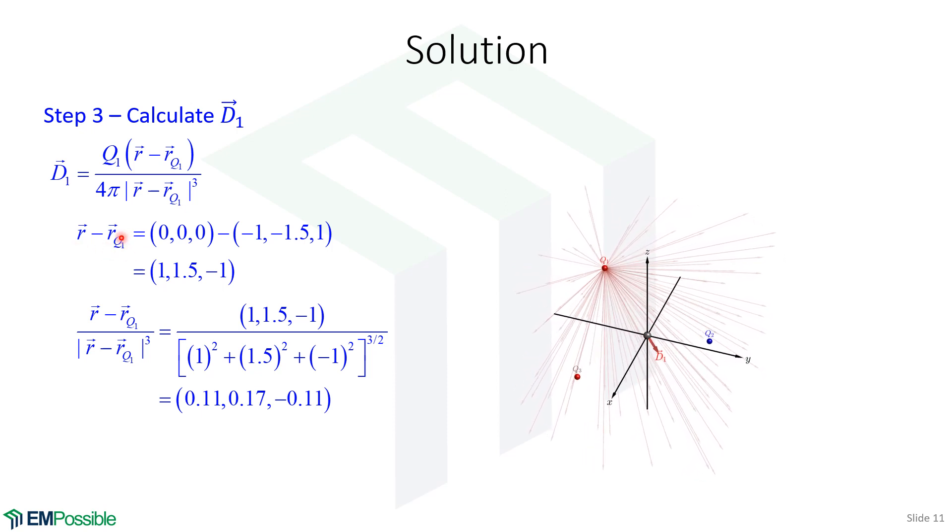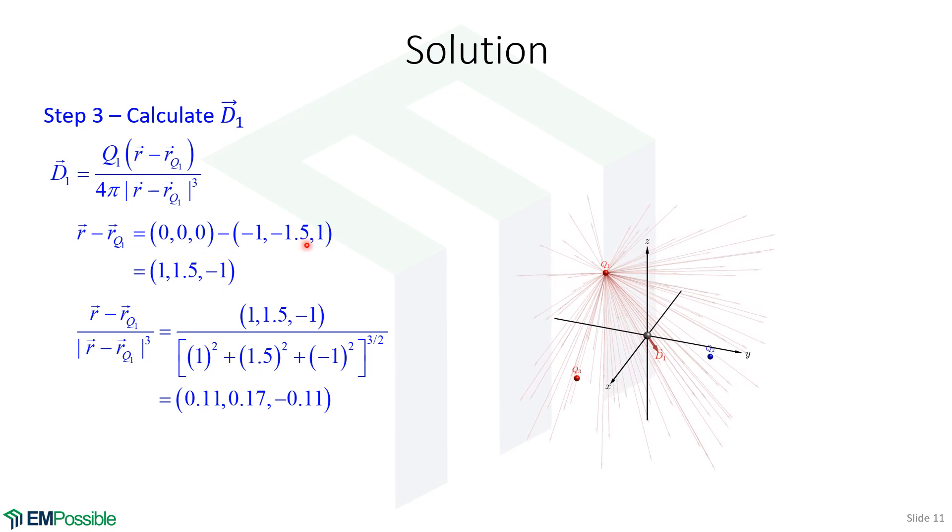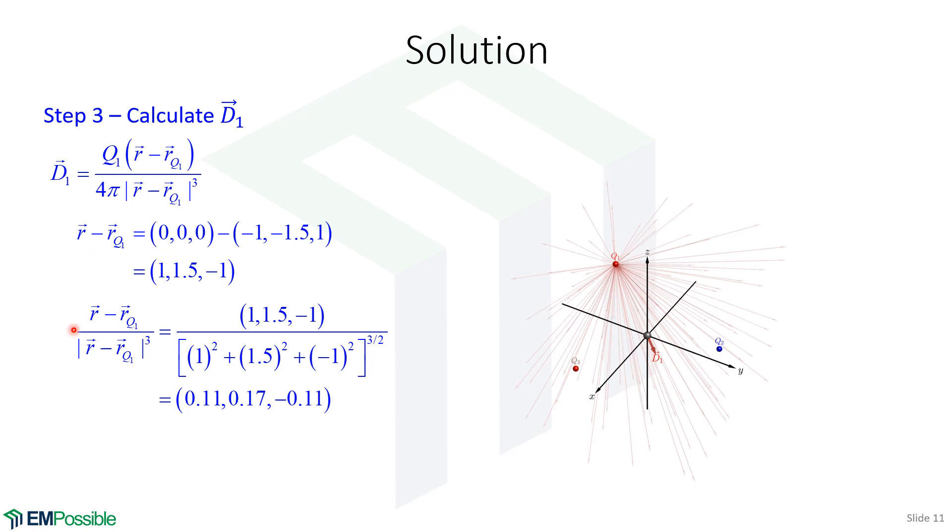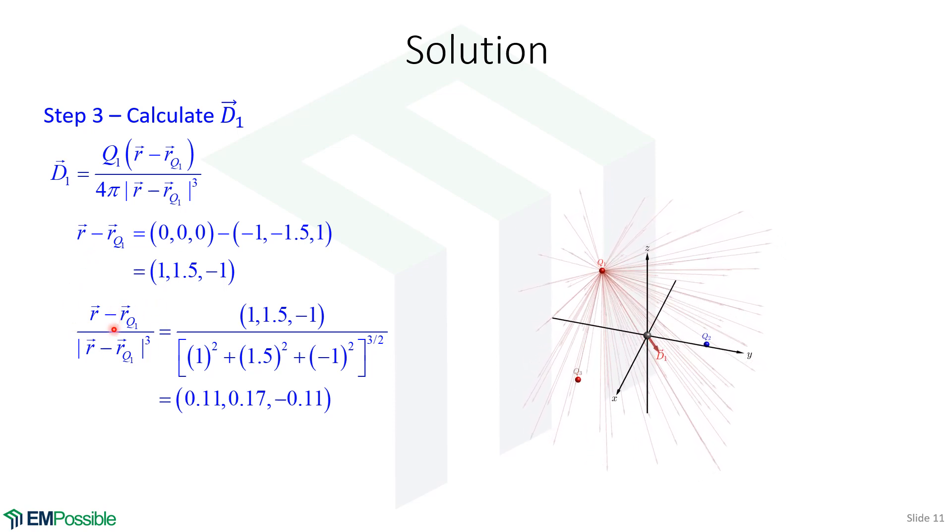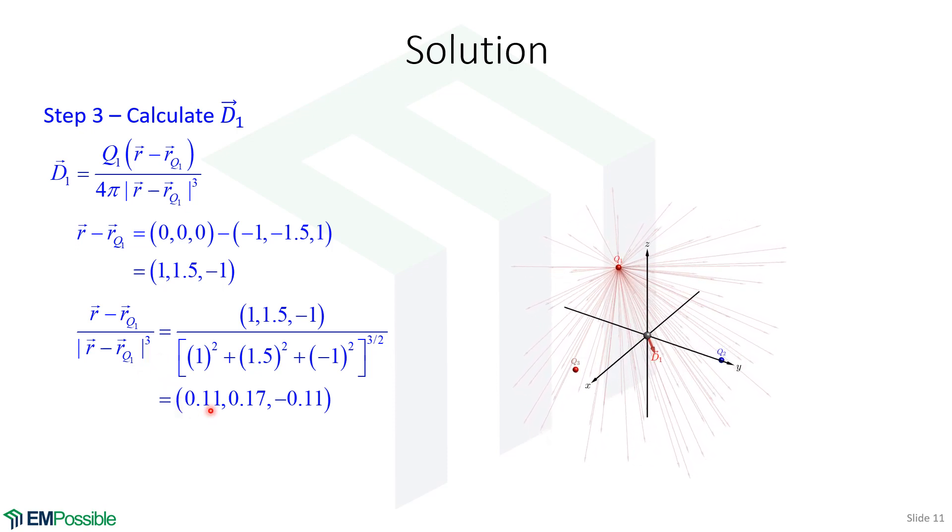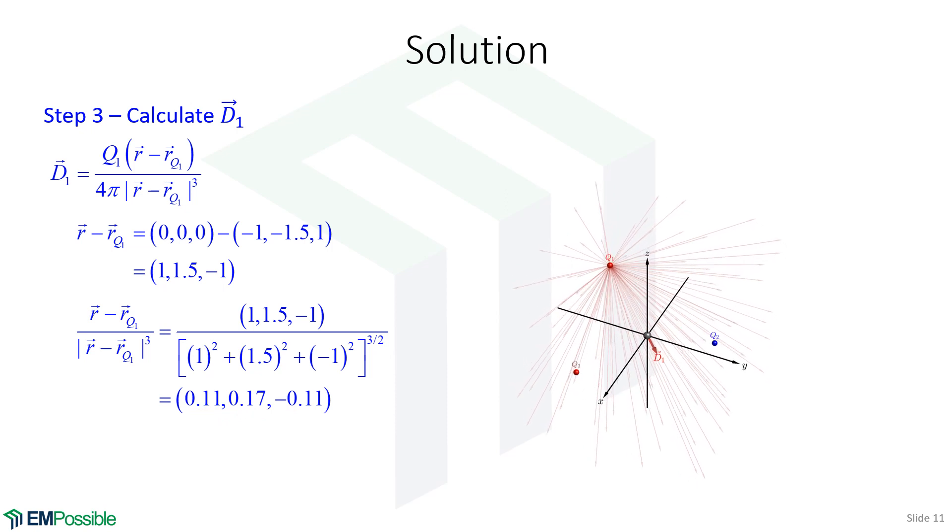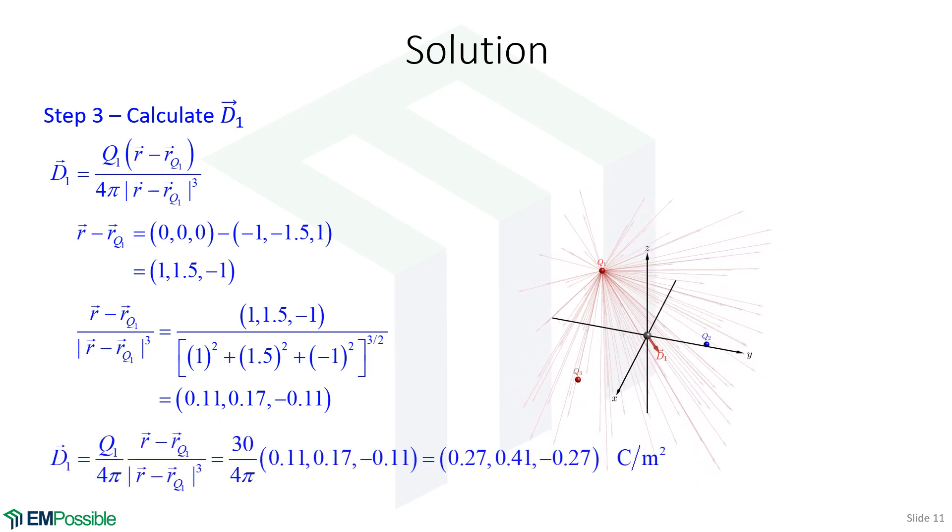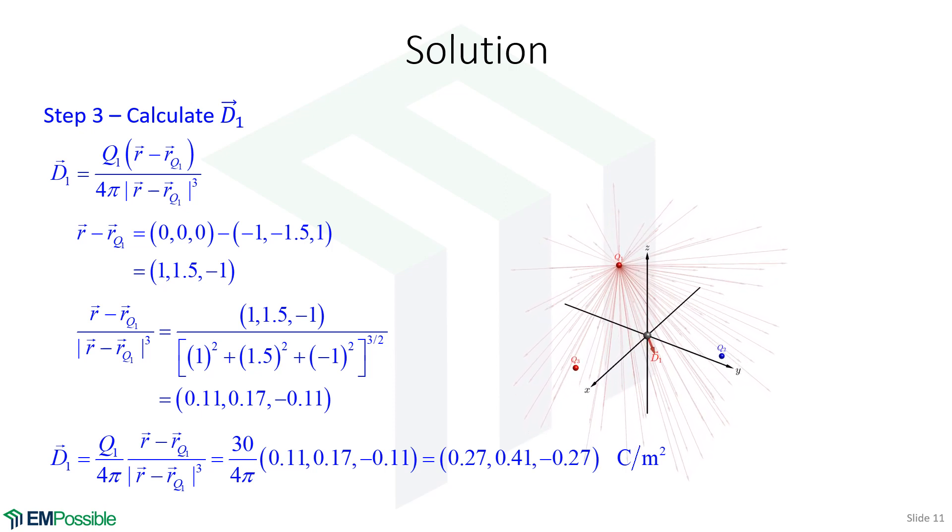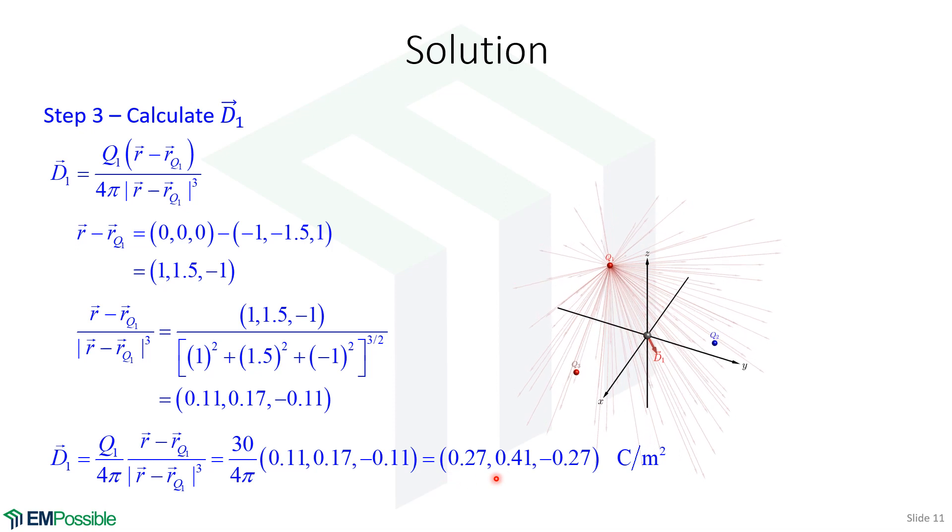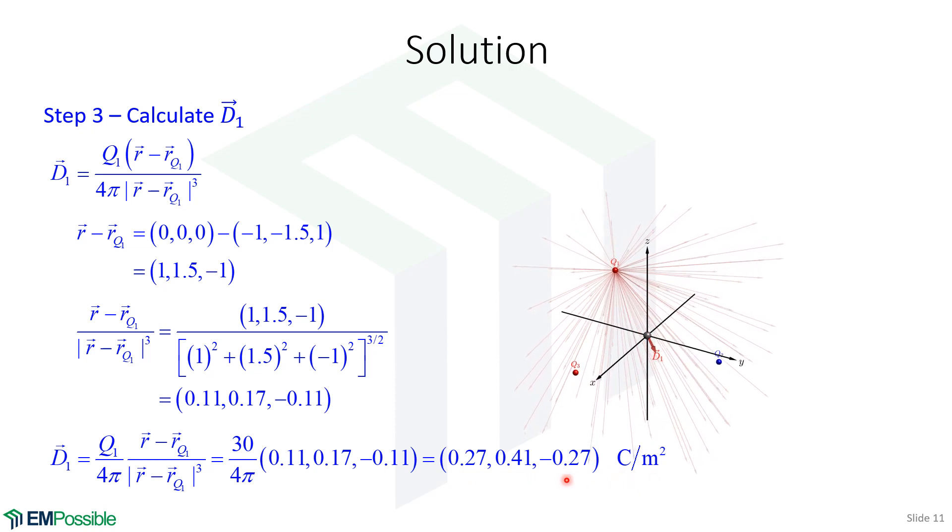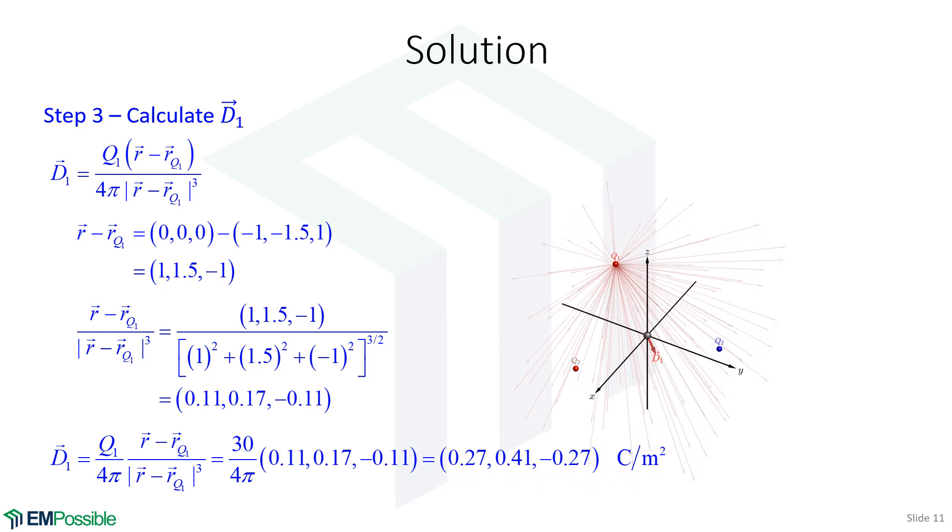To do that, we'll calculate this R minus RQ term. Since we're focusing on the first charge, RQ is Q1. This is actually the position of the first charge. So we calculate R minus RQ, and then we calculate this ratio of R minus RQ divided by the magnitude of that cubed. We work through the numbers and this is the vector that we get. Then the last step is to plug all of that into the original equation for D1. We throw this into our calculator and we end up with the electric flux density at the observation point due to just the first charge, as if the second and third charges were not there.